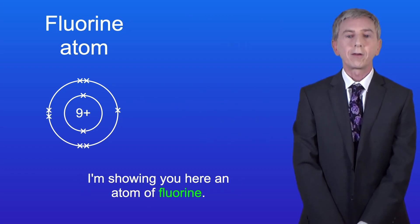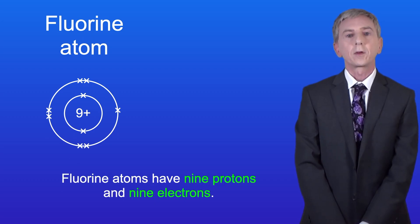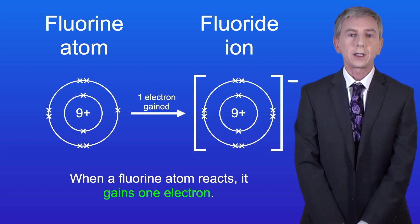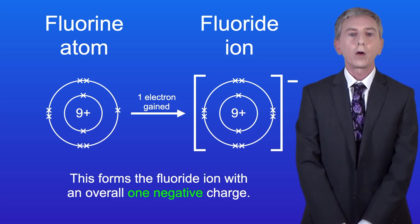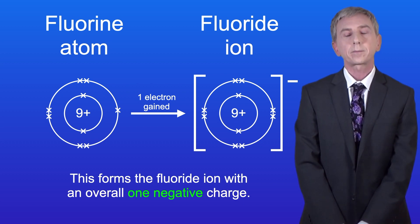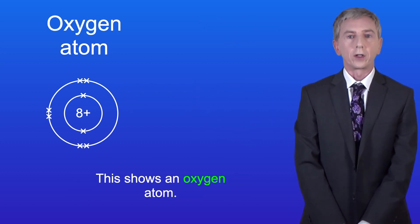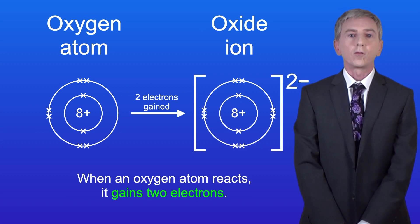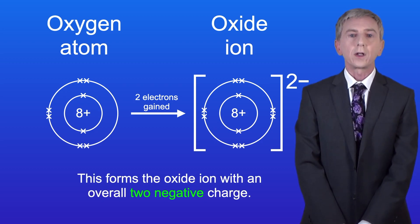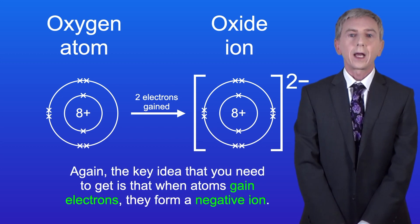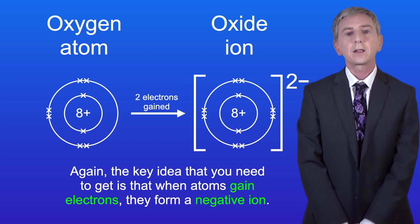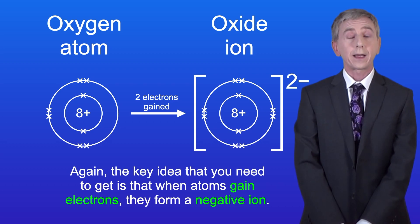Here is an atom of fluorine. Fluorine atoms have got nine protons and nine electrons. When a fluorine atom reacts, it gains one electron. This forms the fluoride ion with an overall one negative charge. This shows an oxygen atom. When an oxygen atom reacts, it gains two electrons. This forms the oxide ion with an overall two negative charge. The key idea is that when atoms gain electrons, they form a negative ion.